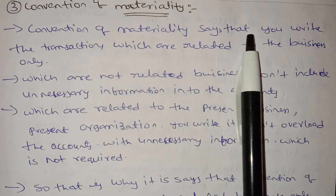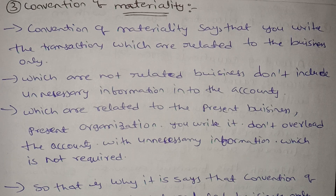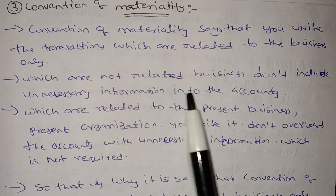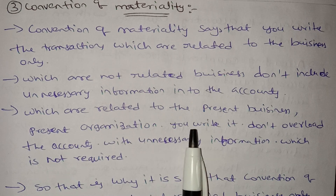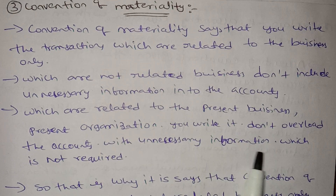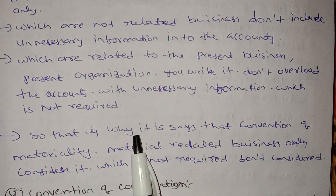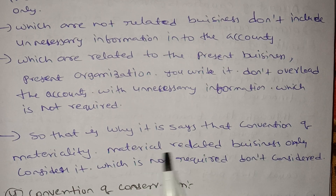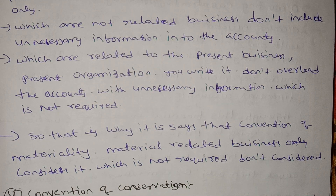Convention of Materiality says that you write only the transactions which are related to the business. Which are not related to the business — don't include unnecessary information into the accounts. Only transactions related to the present business and present organization should be written. Don't overload the accounts with unnecessary information. That is why Convention of Materiality says to consider only what is material and related to the business.